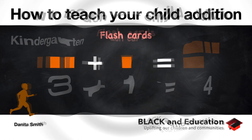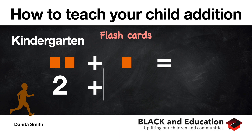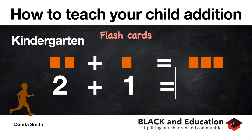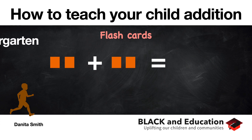Let's look at an easy one — you can probably get this one. This is two blocks right here plus one block. So what is two plus one? It's three. Two plus one is three. That's easy for you to visualize and to get.